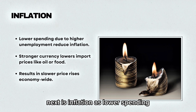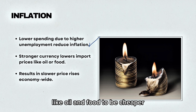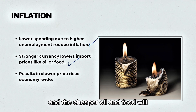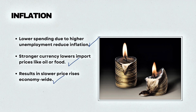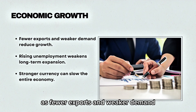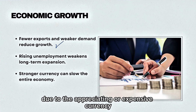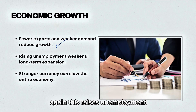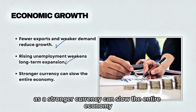Next is inflation: lower spending due to higher unemployment reduces inflation within the economy. A stronger currency will allow import prices like oil and food to be cheaper, resulting in a slower price rise economy-wide. Finally, the effects on economic growth: fewer exports and weaker demand reduce economic growth within the country due to an appreciating currency. This raises unemployment and weakens long-term expansion, as a stronger currency can slow the entire economy.